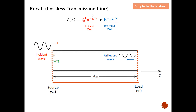From this equation, you can see that Vz is a function of the incident wave and also the reflected wave. The incident wave simply travels from the source all the way to the load — they propagate in that direction. When there is an impedance mismatch, some of the incident wave will be reflected back. That is what we mean by the reflected wave. This is how I obtained the incident wave and also the reflected wave.